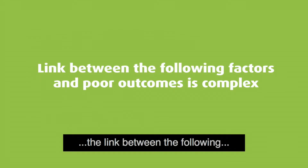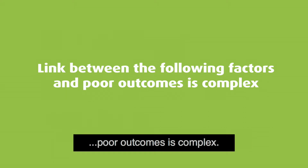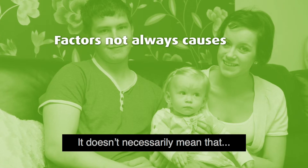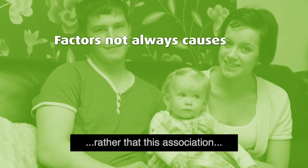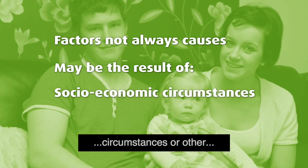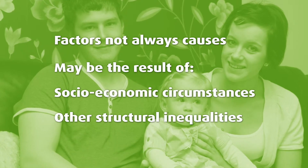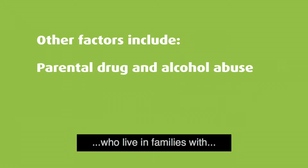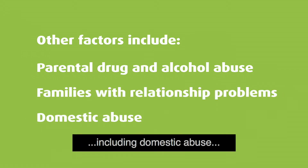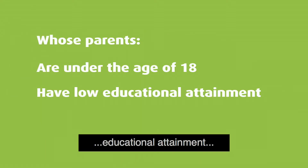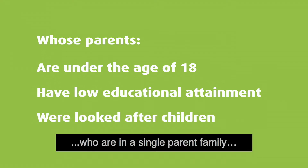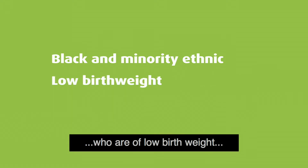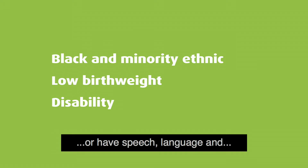It's important to bear in mind that the link between the following factors and the increased risk of poor outcomes is complex. It doesn't necessarily mean that these factors cause problems; rather, this association may be a result of socio-economic circumstances or other structural inequalities. Risk of varying degrees is increased among children who are exposed to parental drug and alcohol problems; who live in families with relationship problems and conflict, including domestic abuse; who are born to parents under the age of 18; whose parents have low educational attainment; whose parents are or were looked after children; who are in a single parent family; who are from certain black and minority ethnic backgrounds; who are of low birth weight; who have physical disabilities; or who have speech, language and communication difficulties.